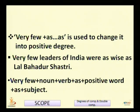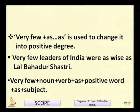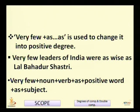'Very few' + 'as...as' is used to change into positive degree. For example: 'Very few leaders of India were as wise as Lal Bahadur Shastri.' The sentence pattern is: 'very few' + noun in plural + verb + 'as' + positive word + 'as' + subject. Since the subject is 'very few leaders,' the plural verb 'were' is used. In this way, both types of superlative degree can be changed into comparative and positive degree.